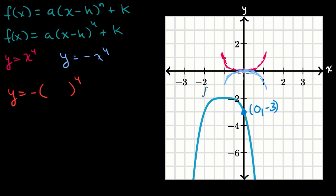So we have negative, instead of x^4. If you shift to the left by one, you would replace the x with x + 1. So y = -(x + 1)^4 is going to look something like this.